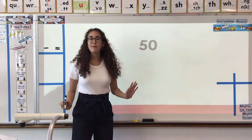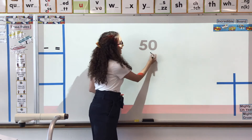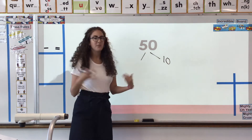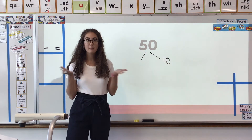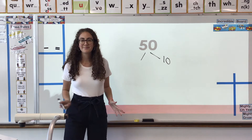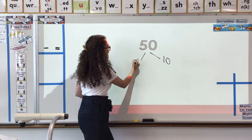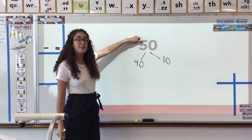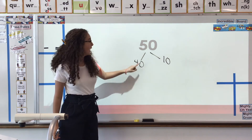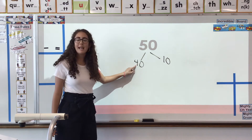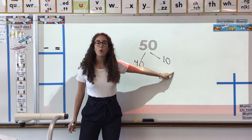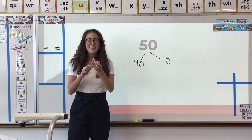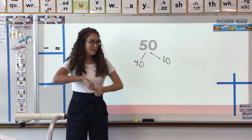Next up, see if you can do this before me. We have 50. If I take out a 10, what's left? It is 40. We went from 5 tens — 50 — to 4 tens — 40 — because we took out 1 of them. Good job, awesome people.